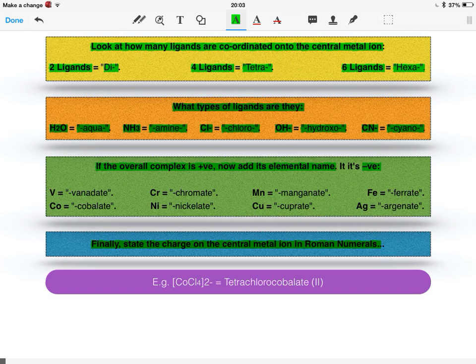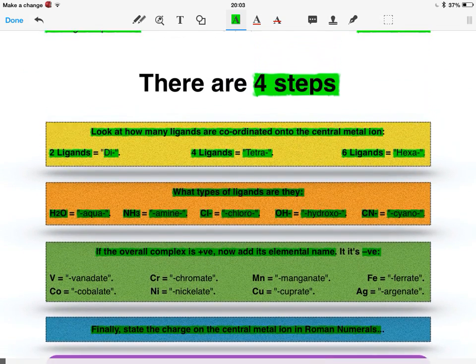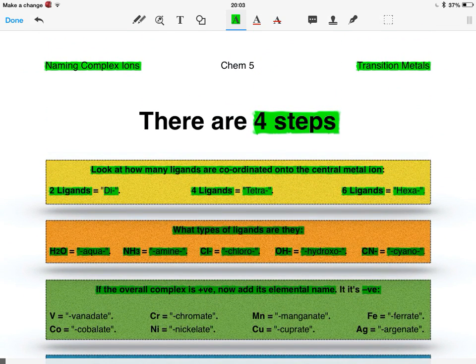And the easiest way for me to put this all together is to just show an example. So in this example here, the name is tetrachlorocobalate, with the two in Roman numerals, because the cobalt has a plus two charge. And that's it for what you need to know to name complex ions.